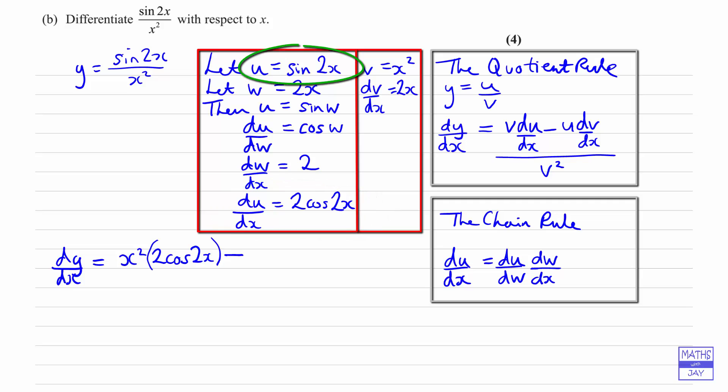And then we're subtracting u times dv by dx, so u is sin 2x, and then we're going to multiply that by dv by dx, so that's going to be 2x. And then we're going to divide by v squared, so that's going to be x squared squared.